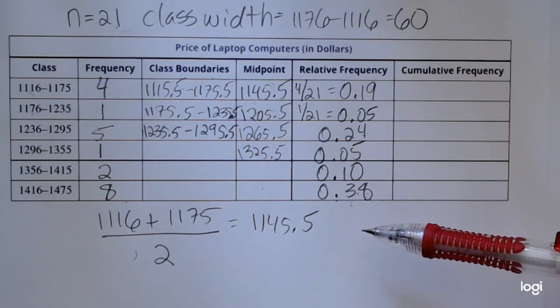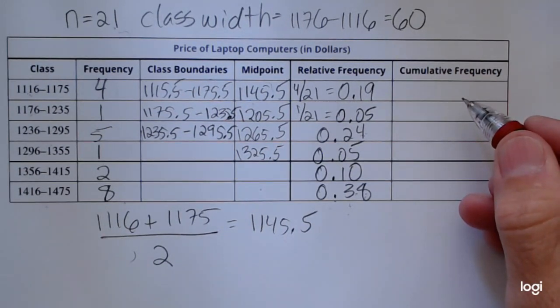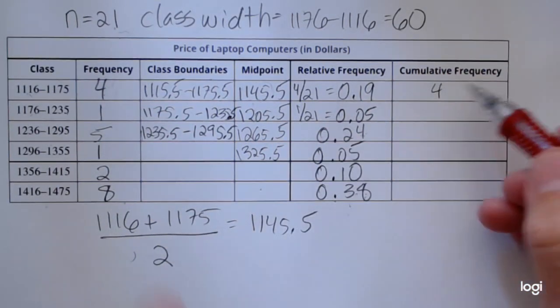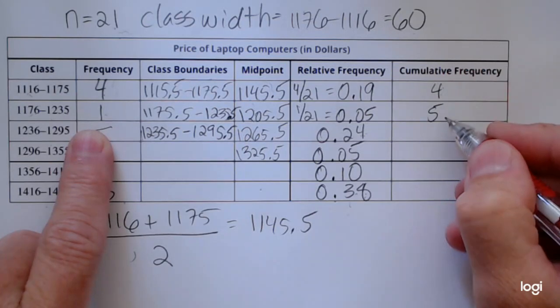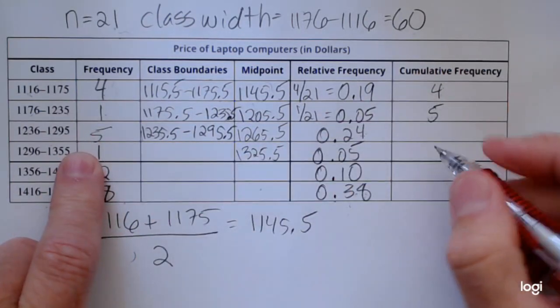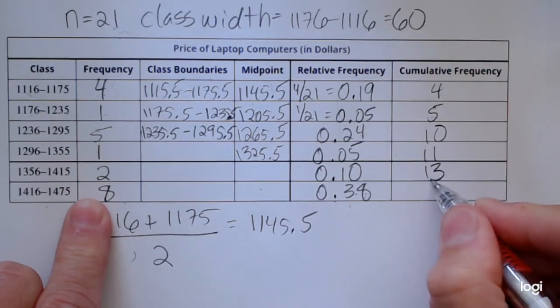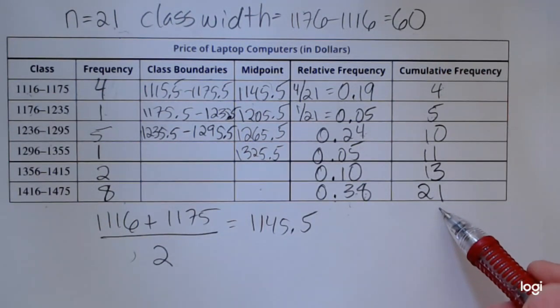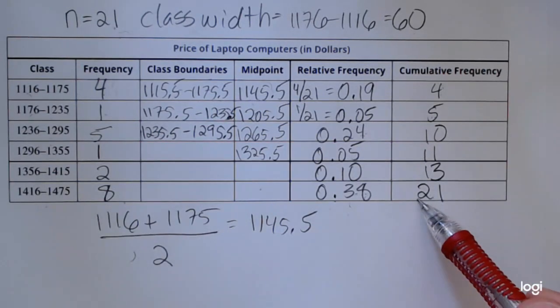The cumulative frequency you can think of as a running total. So I'm going to start with the frequency for the first class and then take this frequency four and add it to the next one, so that'll be five. I'm creating a running total as I go down. I'm going to take the five and add it to the next frequency and keep doing that as I go down, and then 13 plus 8 is 21. It should be no surprise that the cumulative frequency for the last class is the same as the sample size.